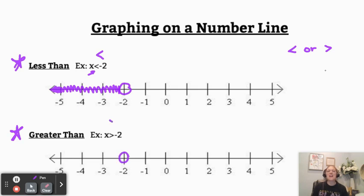But look at our arrow now. It's pointing to the right. So that tells us we're going to shade to the right. Think about it. If x is going to be greater than negative 2, we want to shade where the numbers are bigger than negative 2. And that is over here on the right.